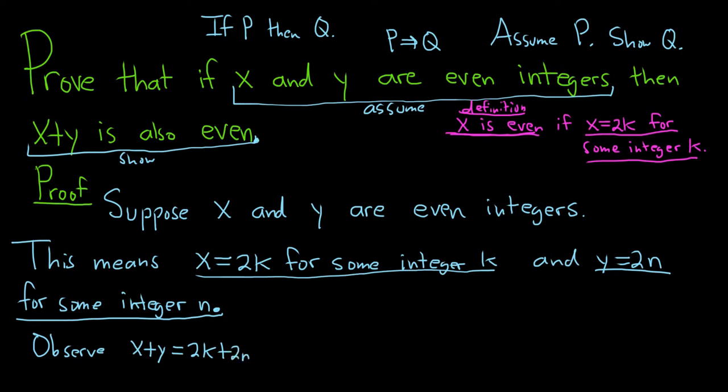And so now, you want to show it's even, so what are we trying to do? We're trying to show that x plus y is 2 times some integer, right? That's what we need. That's the goal. This is where we are going. We need to show x plus y is 2 times some integer. So we're almost there. What we can do now is pull out the 2 and write this as k plus n.